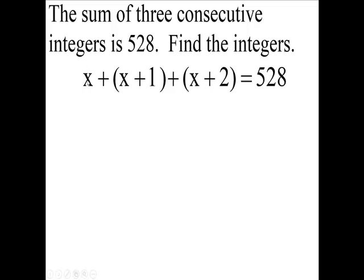So here's my first integer. Here's my second integer. And here's my third integer. Add them up. The result is 528. We don't need these parentheses anymore, do we?